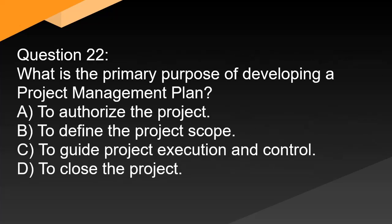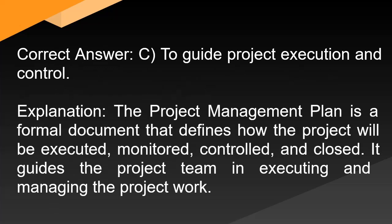Question 22: What is the primary purpose of developing a project management plan? A. To authorize the project. B. To define the project scope. C. To guide project execution and control. D. To close the project. Correct answer: C. To guide project execution and control. Explanation: The project management plan is a formal document that defines how the project will be executed, monitored, controlled, and closed. It guides the project team in executing and managing the project work.